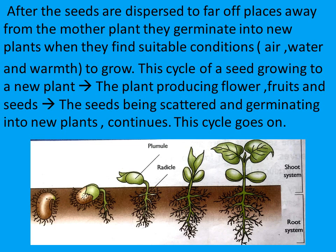After the seeds are dispersed to far off places away from the mother plant, they germinate into new plants when they find suitable conditions — air, water, and warmth to grow. This cycle of a seed growing into a new plant, the plant producing flowers, fruits, and seeds, the seeds being scattered and germinating into new plants, continues. This cycle goes on and on.